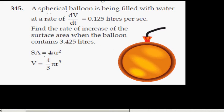A spherical balloon is being filled with water at the rate of dV/dt = 0.125 liters per second. Find the rate of increase of the surface area when the balloon contains 3.425 liters.